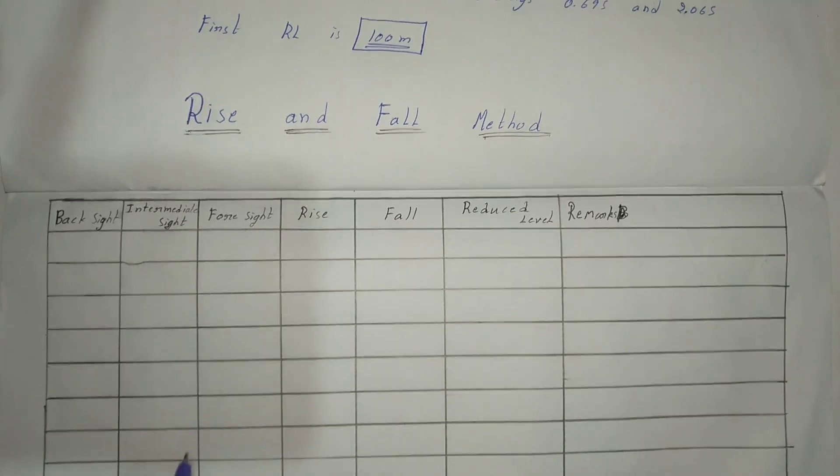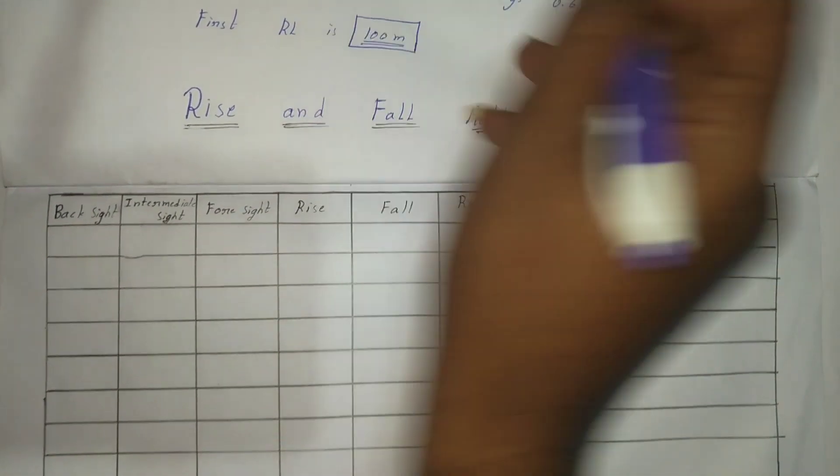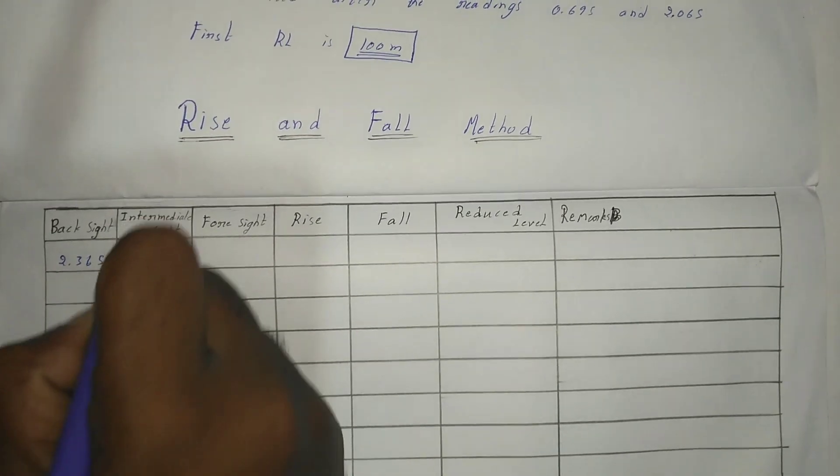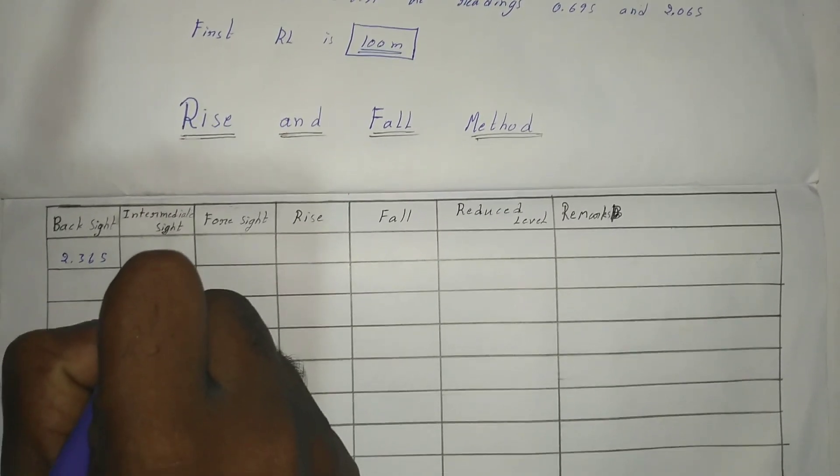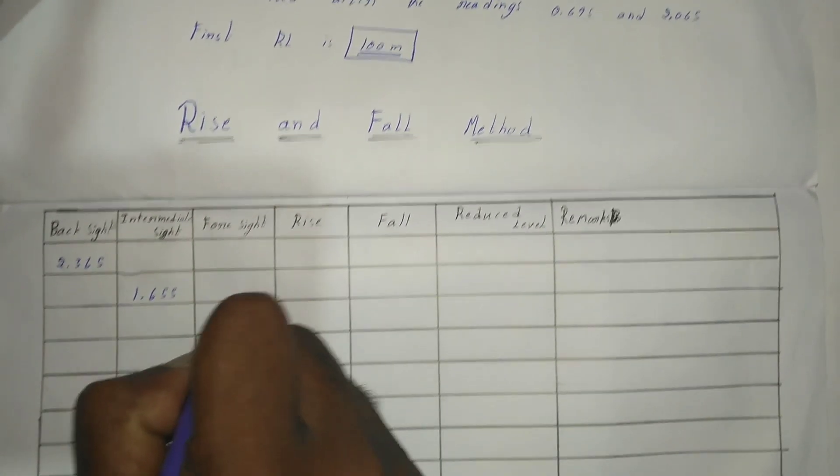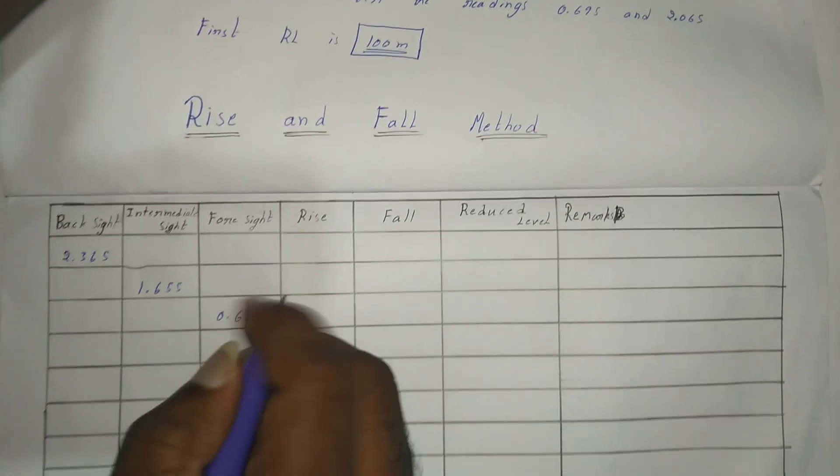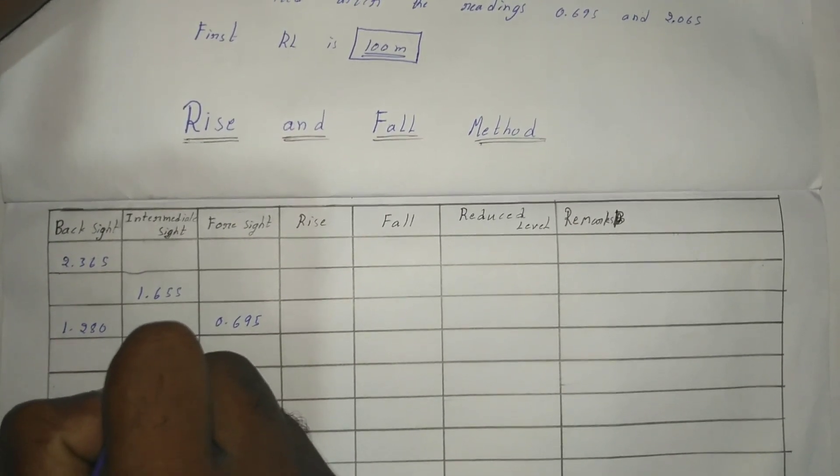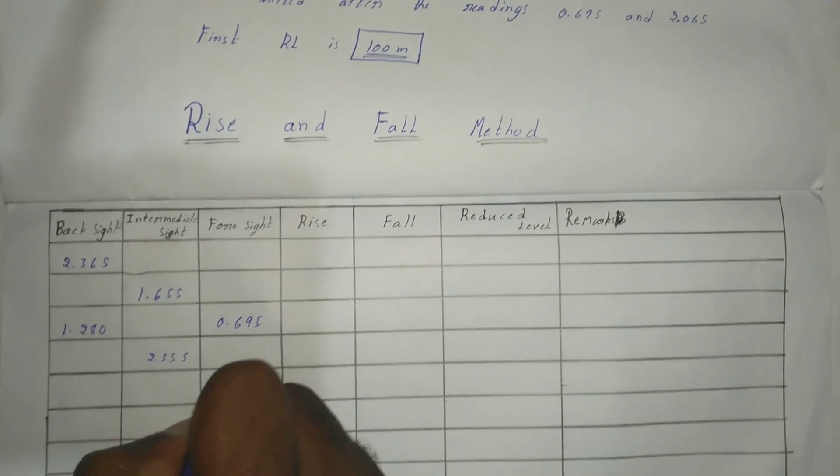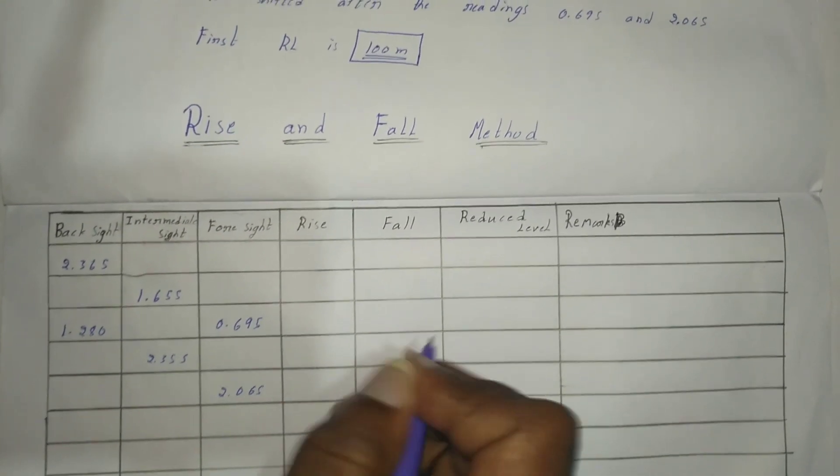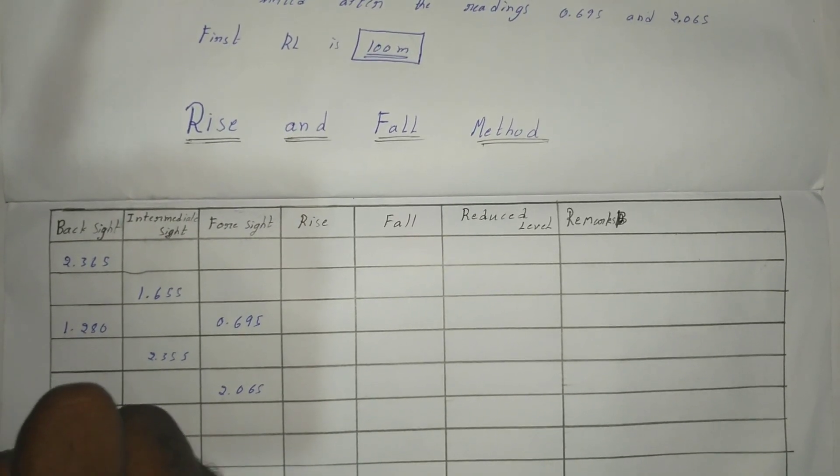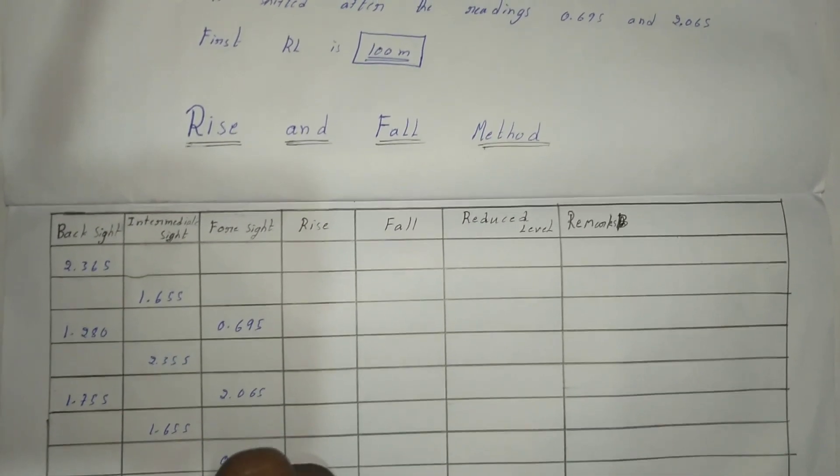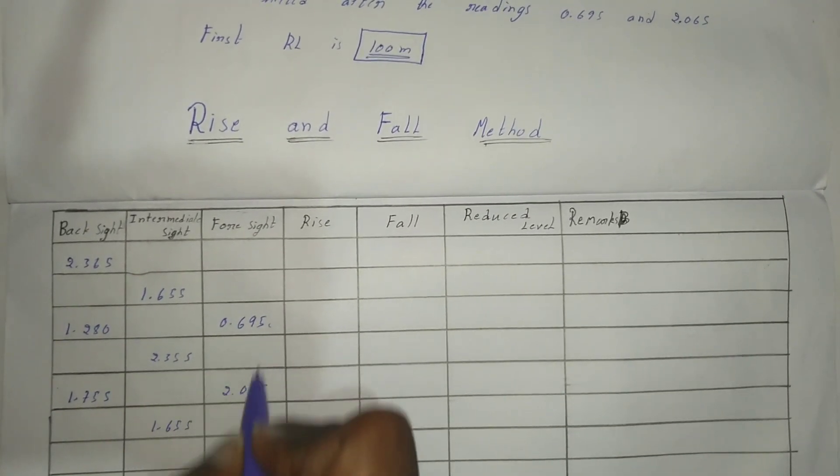First, note the sides. It is a back side, then intermediate side. You already know the instrument is shifted after this reading, so again it is a back side. After these two points, the instrument is shifted.